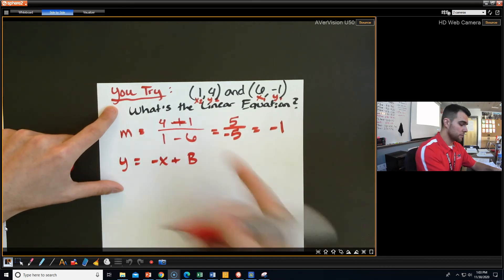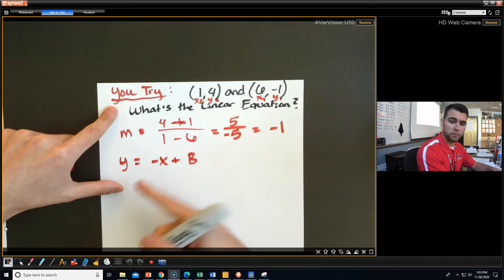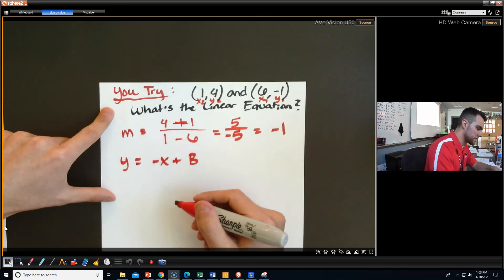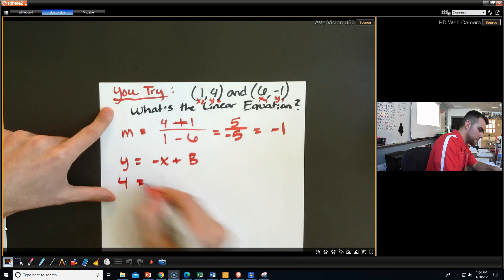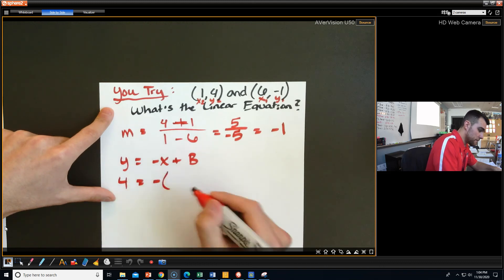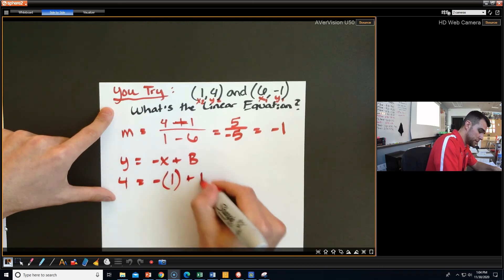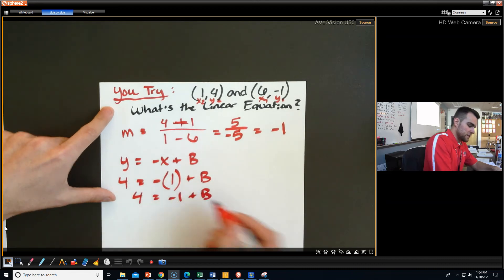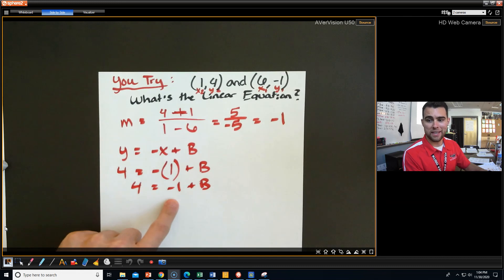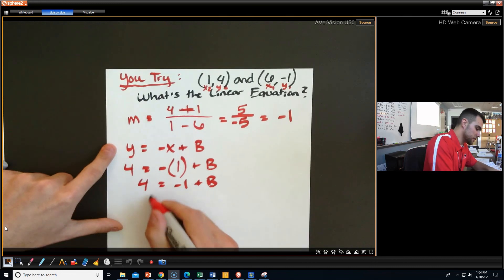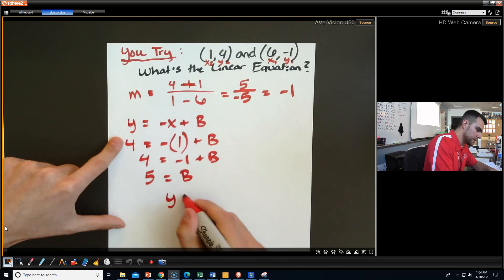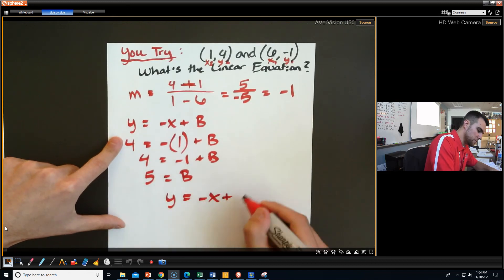And lastly, I'm going to take one of these points, plug them in for x and y. I'm going to do this one because it has less negatives. That's kind of nice for us. So 4 equals - and I have 1 in for x plus b. So 4 equals -1 plus b. To get rid of that -1 next to the b, I have to add one to both sides. So 5 equals b. Thus, my equation on my line is y equals -x plus 5.